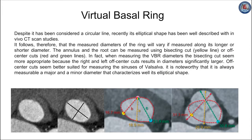Despite having been considered a circular line, recently its elliptical shape has been well described in in vivo CT scanning studies. It follows therefore that the measured diameter of the ring will vary if measured along its major or minor diameter. The bisecting off-center cuts represent well-identifiable lines, mainly used for accurate measurement of the root at the level of the sinuses of Valsalva, but also utilized for accurate measurement of the aortic cusps. Because the virtual basal ring is elliptical, measuring its diameter using the bisecting cut has been proved more accurate, while off-center cuts are better suited to measure the sinuses of Valsalva.